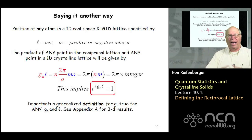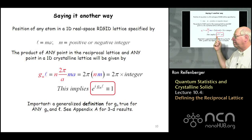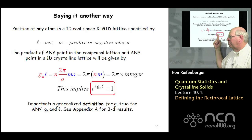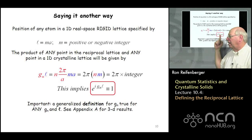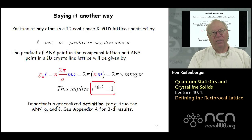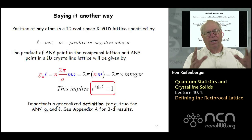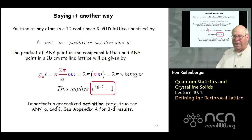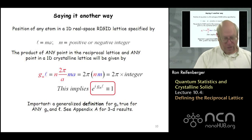A completely general way to specify a reciprocal lattice vector is: when e raised to i times g_n times l equals unity, where l is a displacement by a positive integer number of lattice constants, that defines the reciprocal lattice vectors g_n. This more formal definition is used to define reciprocal lattice vectors in three dimensions — if you want to see that discussion, refer to the appendix. This definition follows simply from the discussion on the previous slides.